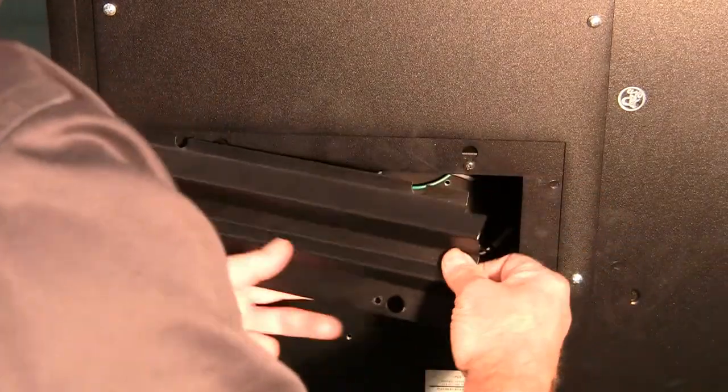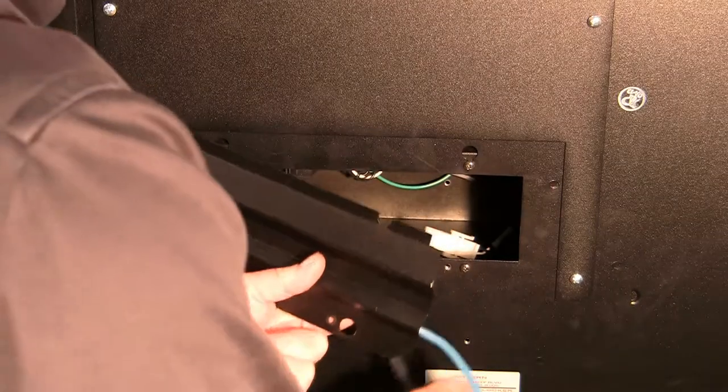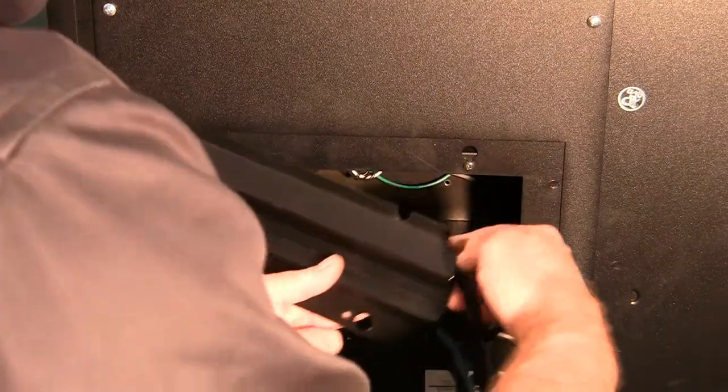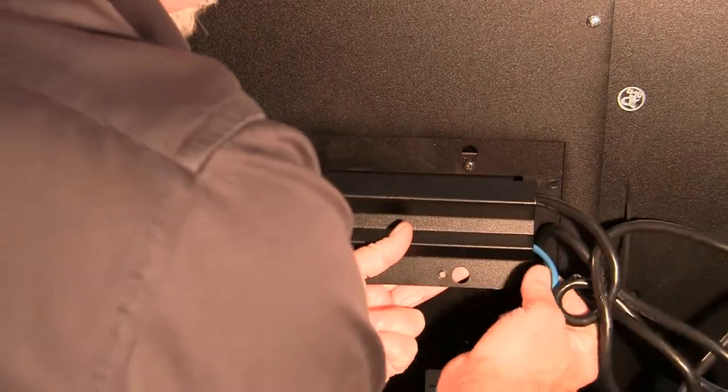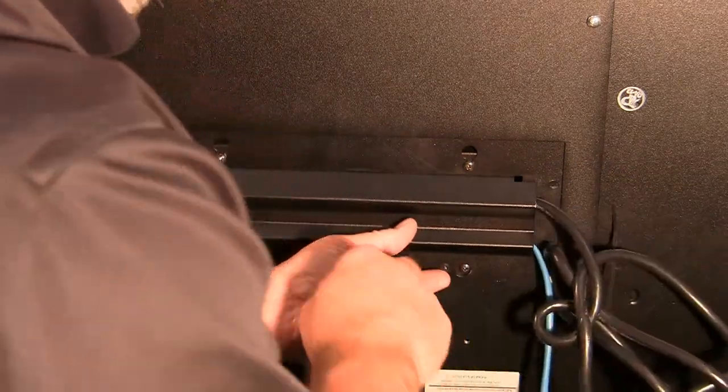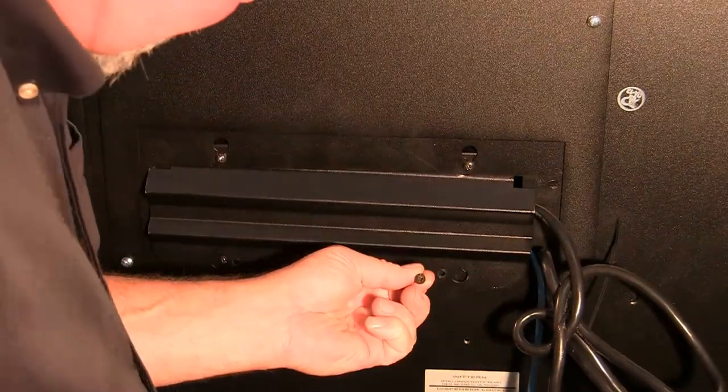When replacing the cover, run the umbilical cords if connected and the power cord exiting the top larger angled opening, and the Ethernet cord exiting the smaller lower opening. This will keep the cords secure if they should be pulled during machine movement.